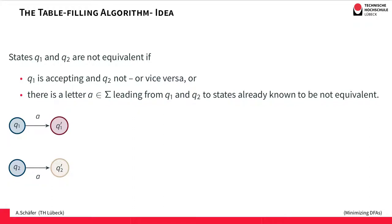In this algorithm, states are marked that are not equivalent. Two states q1 and q2 are not equivalent if: first, q1 is accepting and q2 is not, or vice versa — because if one state is accepting and the other is not, they cannot be equivalent and cannot be merged.